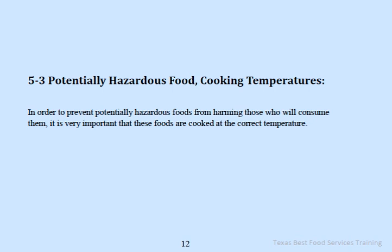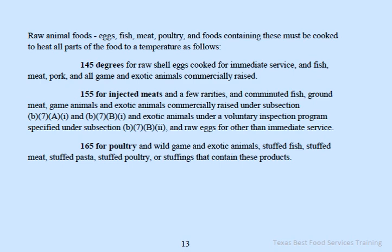Cooking temperatures — very important. In order to prevent potentially hazardous foods from harming those who consume them, it is very important that these foods are cooked at the correct temperature. Raw animal food — eggs, fish, meat, poultry, and foods containing these — must be cooked to heat all parts of the food to the required temperature.